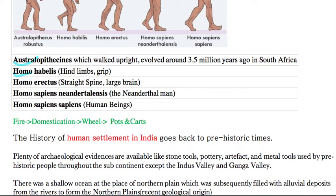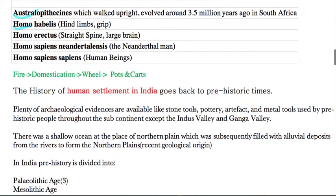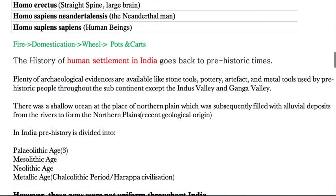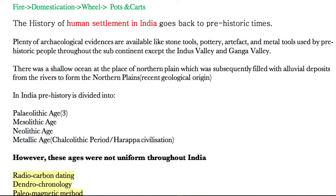Now that we have some knowledge of human evolution, we will study some important phases of human activities which ultimately led to the establishment of civilization — like the Indus and Egyptian civilizations. Before civilization came into being, there were key developments: first, fire was discovered; then domestication of animals; then the wheel was discovered, leading to the making of pots and carts.